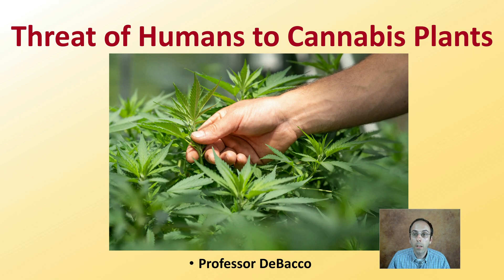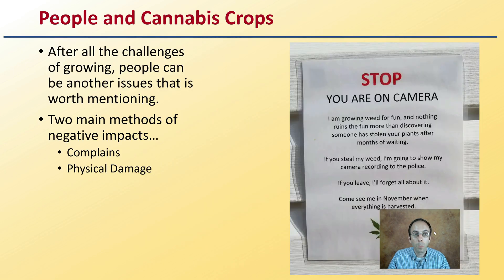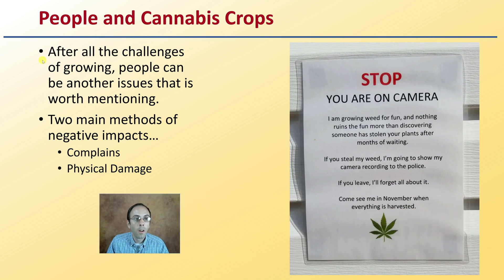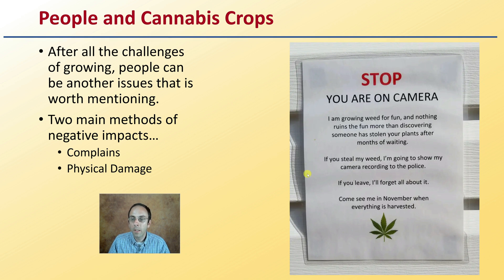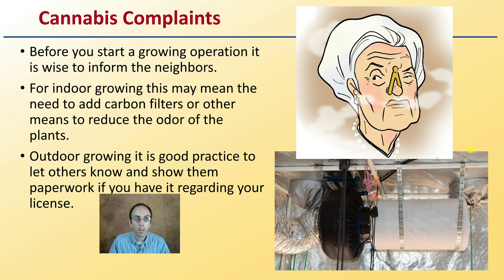After all the challenges of growing, people can be another issue worth mentioning. Two main methods of negative impact can be complaints as well as physical damage. Some growers will set up signs saying 'Stop, you're on camera' about the plants they're growing — they don't want anyone to steal anything, and rightfully so. Keep this in mind: humans are another kind of pest to be mindful of.